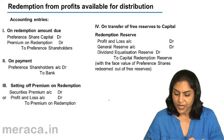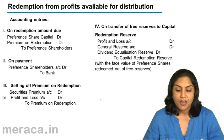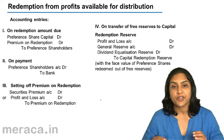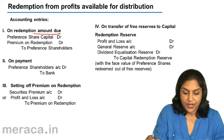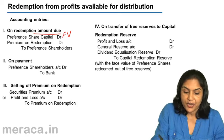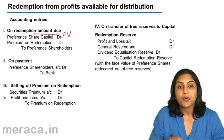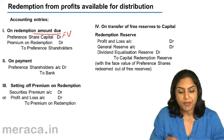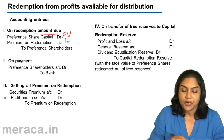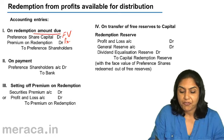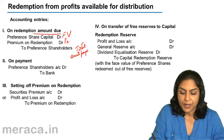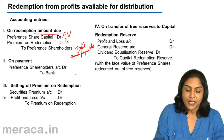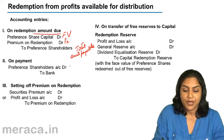Let us see what the accounting entries are. First and foremost, for the redemption amount due, there is no change in the entry. Preference share capital account is debited with the face value, premium on redemption of preference shares if any, with the premium on redemption, to preference shareholders with the total amount payable including premium. When we make the payment, it is preference shareholders account debit to bank.